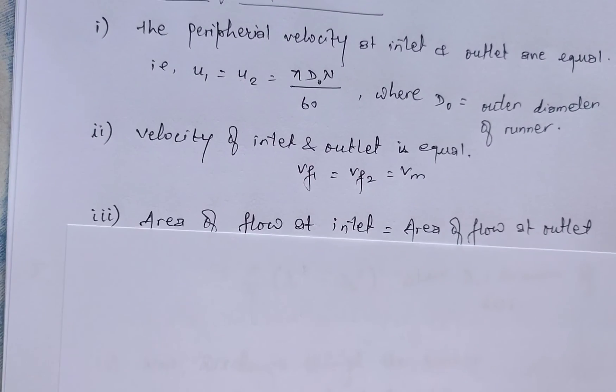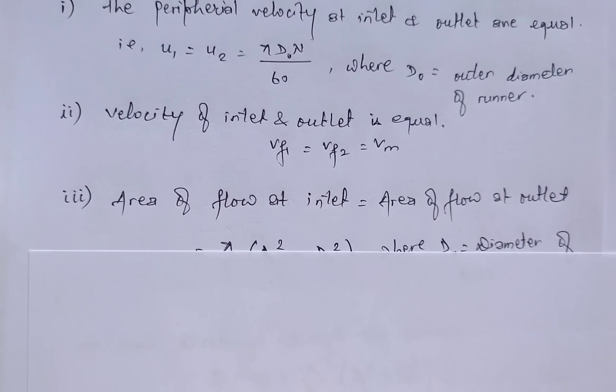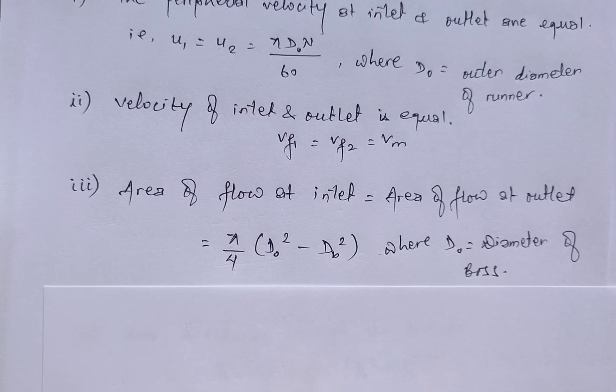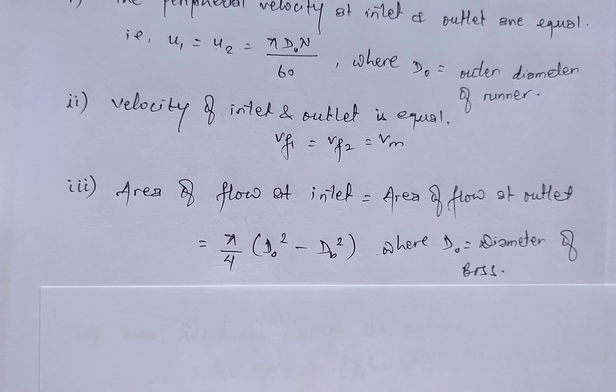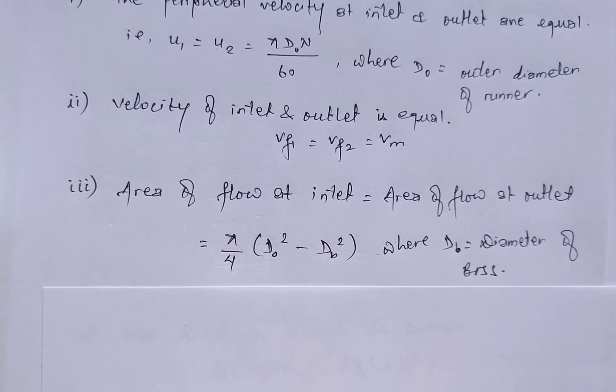Third, area of flow at inlet equals area of flow at outlet, that is π/4 × (D₀² - Db²), where D₀ is the diameter of runner and Db is the diameter of boss.